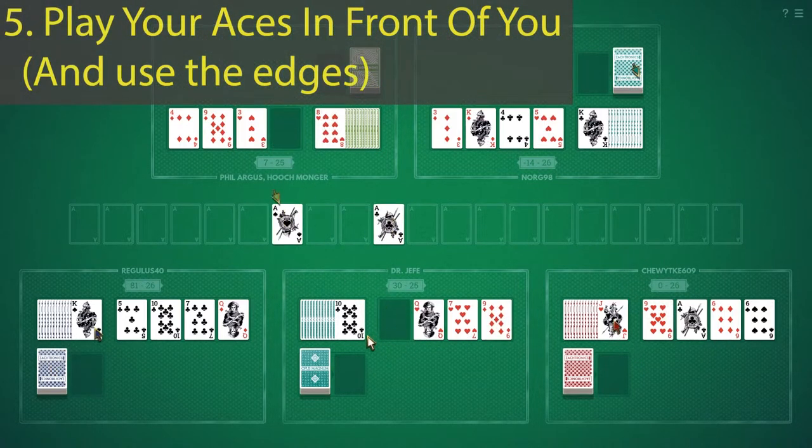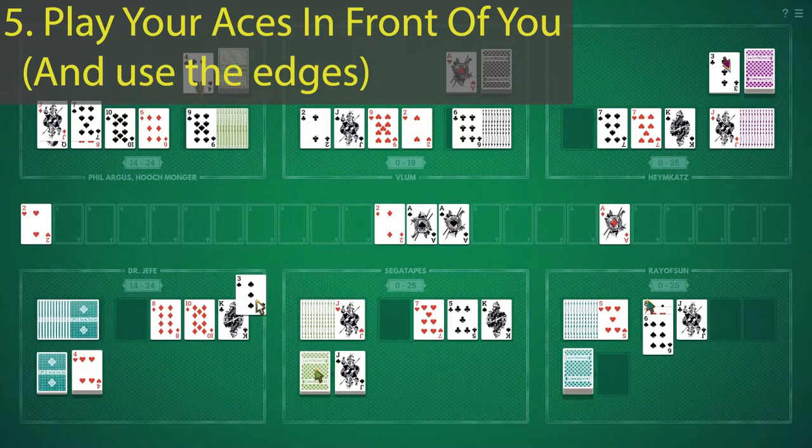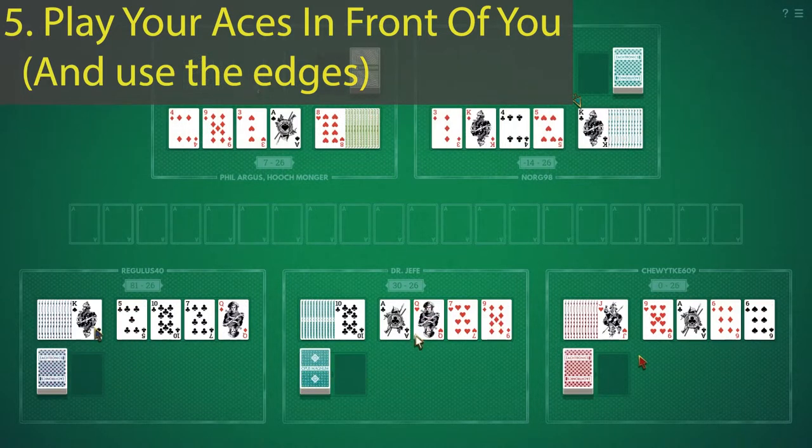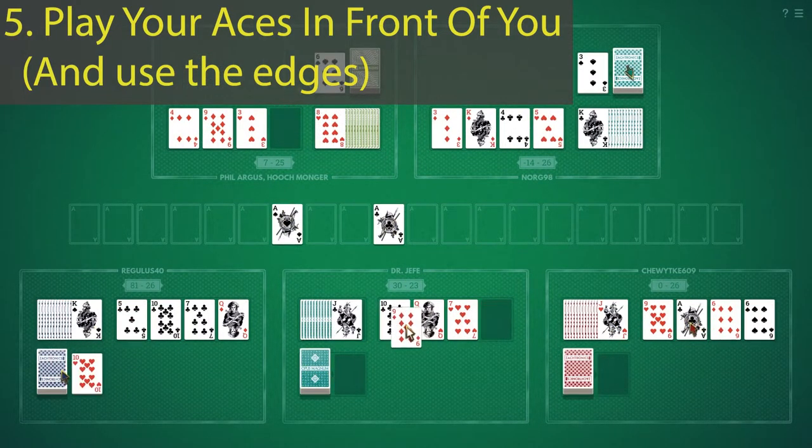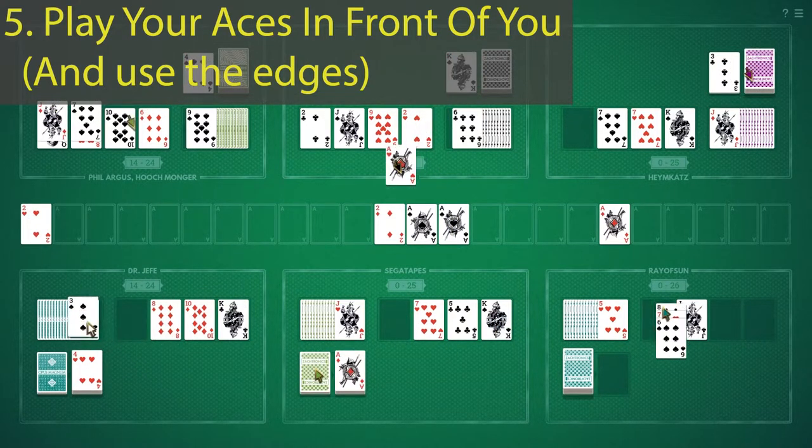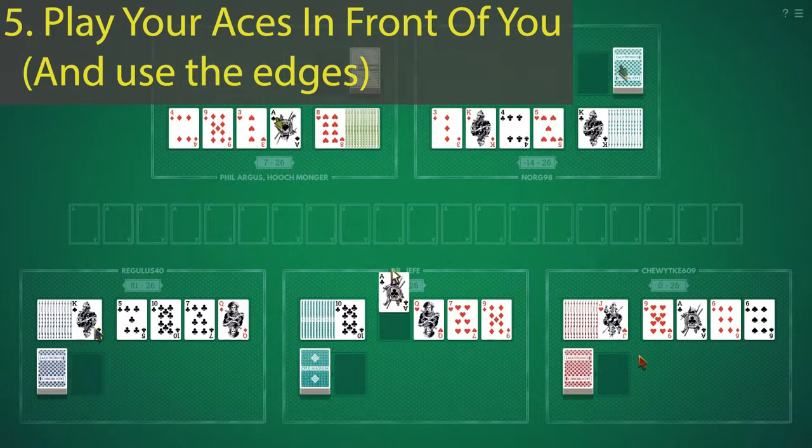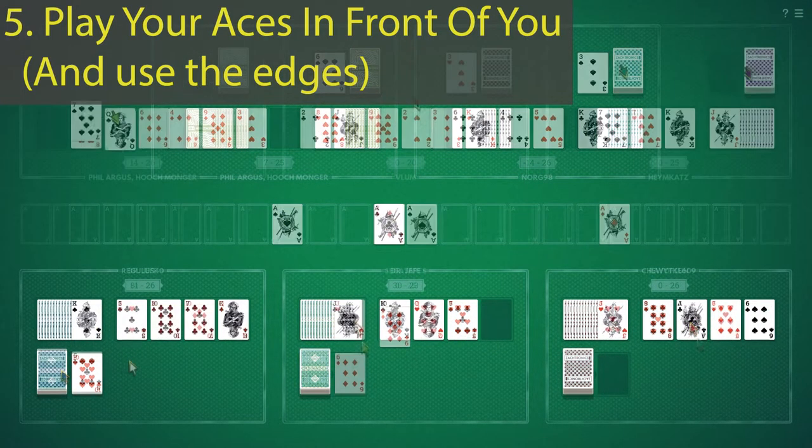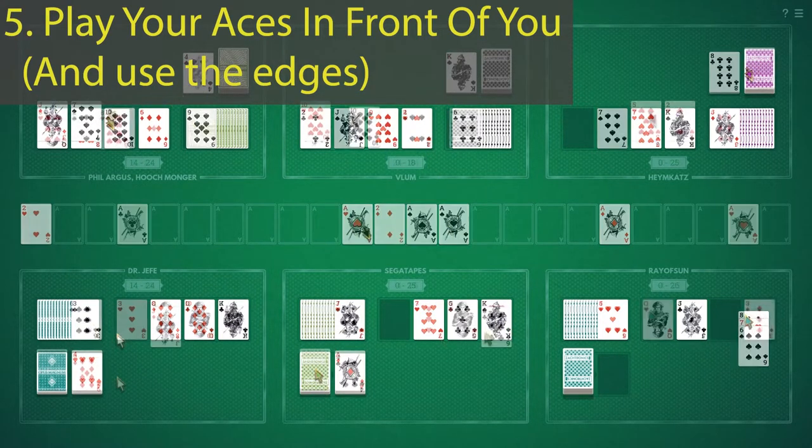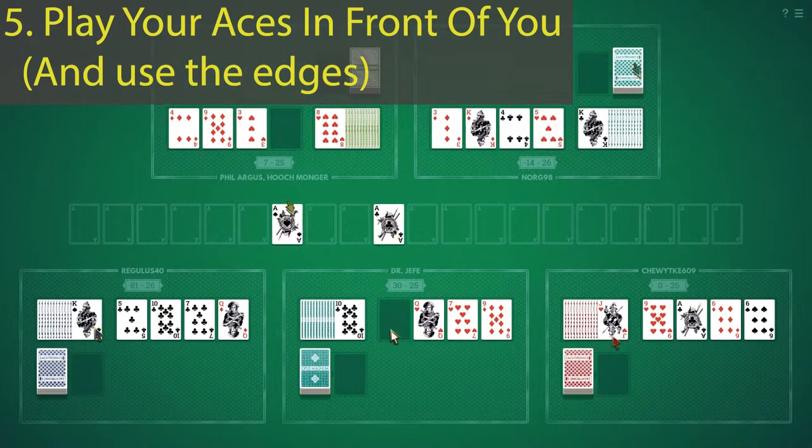Tip 5 is knowing where to play your Aces. If you're in the center, you're going to want to play the Aces right above you, as you see in this clip. However, if you're on the edges, you can play your Aces directly to either the left or right edge. Playing Aces in front of you means you will have to take less time scanning the row than your opponents, who have to scan all the way from left to right, or if they're on the right or left side, scanning into the middle. This should allow you to play more cards more quickly than your opponents.